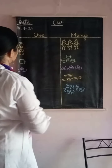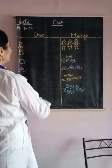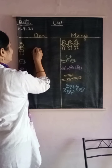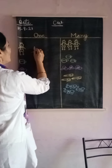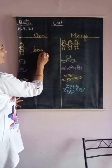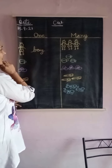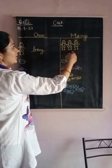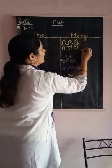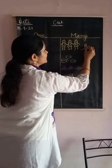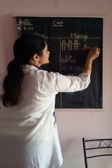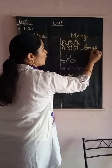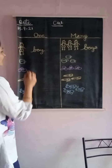There is a picture, so we will find one and many. One boy — write here: B, O, Y — boy. Now, there is more than one boy, so many boys. We will write 'boys' — we add S. When we add S, it means many. Boys.